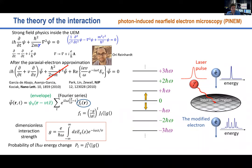My first PhD student Ori Reinhardt was bothered by the theory not starting from a relativistic wave equation, but from the Schrödinger equation. He resolved this starting from Klein-Gordon and later Dirac. Under the paraxial approximation, you can show it is sufficient to change M to γM in the longitudinal direction. This actually revealed a mistake in ten years of papers in this field — you can see a bunch of errata published over the last two years following his insistence. So yes, it is worth being stubborn sometimes.